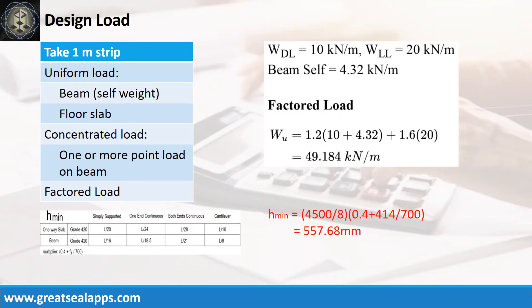The beam carries a uniform dead load of 10 kN/m and uniform live load of 20 kN/m. The beam's self-weight is 4.32 kN/m for a factored load of 49.184 kN/m.